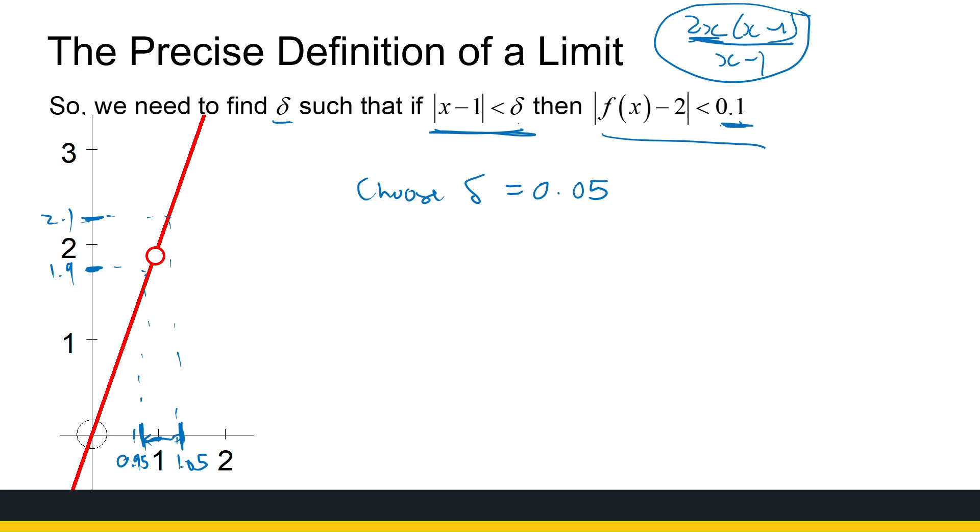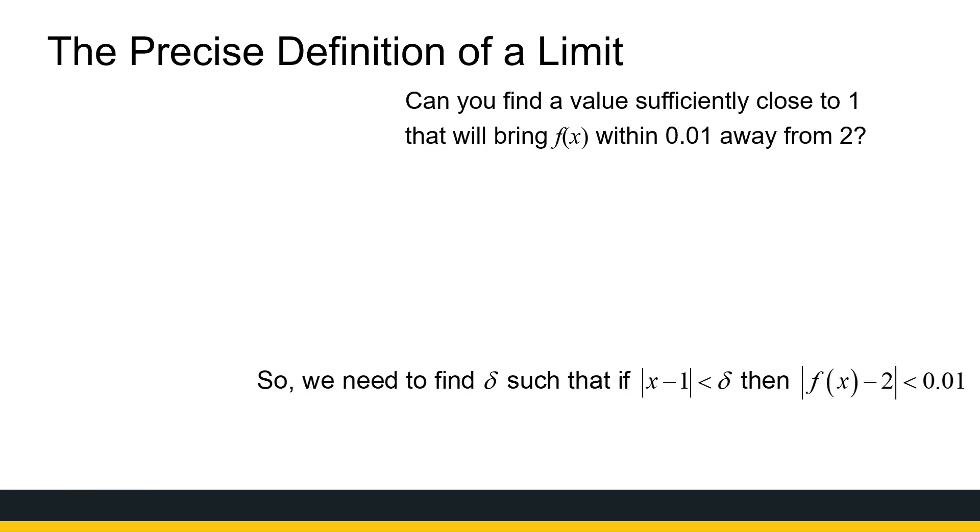What are we saying? We're saying, if we choose any x value that is within 0.05 away from 1 on either direction, then my y value will land within 0.1 away from 2.